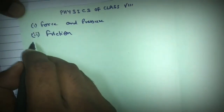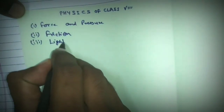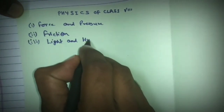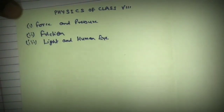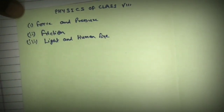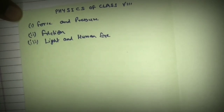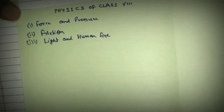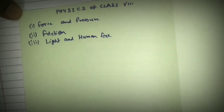The next chapter in physics is light and human eye. In this chapter first of all we discuss the basic characteristics of light like reflection of light and refraction of light, and we study about the usage of mirrors and different lenses such as concave lens and convex lens.